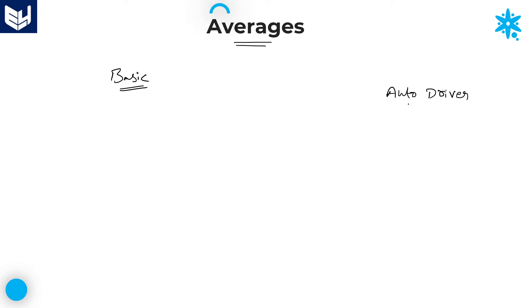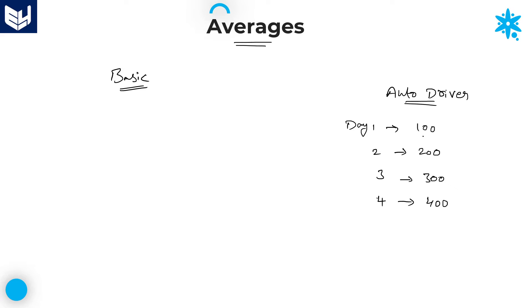An auto driver will not get the same amount daily. Let us suppose that on day 1 he got 100 rupees, day 2 he got 200 rupees, day 3 he got 300 rupees, and day 4 he got 400 rupees. If we ask after 4 days how much amount he is getting every day, his answer will be 250 rupees.